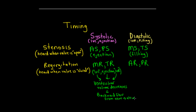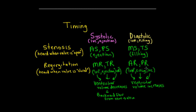For aortic regurgitation and pulmonic regurgitation, we do a similar analysis. IVR, filling, and IVC are normally the phases where the semilunar valves are closed. During these phases, ventricular volume increases because of backward flow from the great artery into the ventricle, so these are no longer truly isovolumetric phases. Theoretically, the murmur can be heard through these phases, and depending on severity, it may even extend into what would normally be IVC, as long as the pressure in the great artery exceeds that of the ventricle.